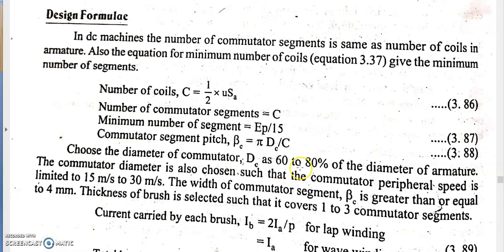The diameter of the commutator DC is taken as 60 to 80 percent of the armature diameter D. Since DC and the number of coils C are both known, we can calculate the commutator segment pitch.